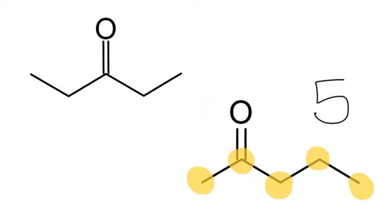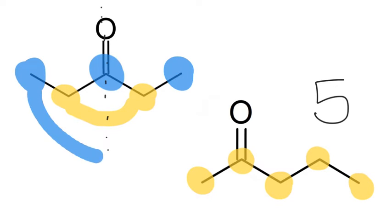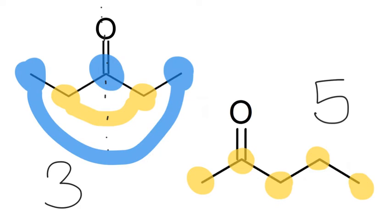For pentan-3-one, you can expect to see one peak for the central carbonyl carbon, and another peak for the two CH2s — this CH2 and this CH2 give one peak. That's because, unlike the other molecule but similar to our last set of examples, there is a line of symmetry down the molecule, so these CH2s are equivalent. Finally, you'd expect a third peak for both CH3 groups, which are absolutely equivalent to each other. So you get three peaks in total for pentan-3-one because it has equivalent environments.